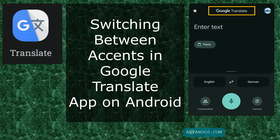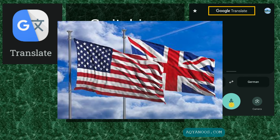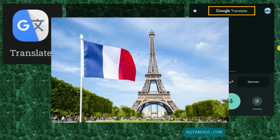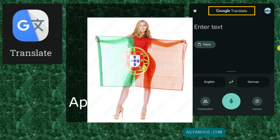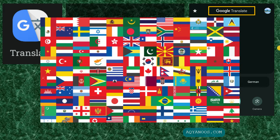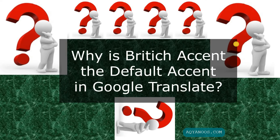Switching between accents in the Google Translate app on Android. We use English as an example, but the same way you can switch between any other accents — for example, different French accents, German accents, Chinese accents, Portuguese accents, Arabic accents, and many more. As you know, Google is an American company, so why is the British accent the default in Google Translate and all Google services? If you know the answer, write it in the comments below.